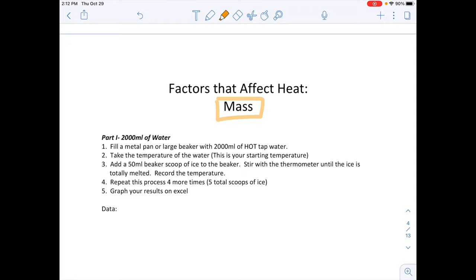There are two parts. Both have the same materials needed. First part, we're going to have 2,000 milliliters of water. You need a metal pan or a beaker. We're going to be using a pan today. 2,000 milliliters of hot tap water. We're going to need a scoop of ice. We're going to use a small 50 milliliter beaker just to help us with that scoop to keep it standard, and we will need a thermometer.